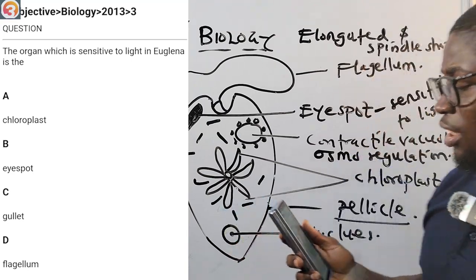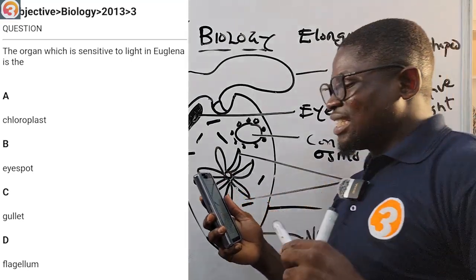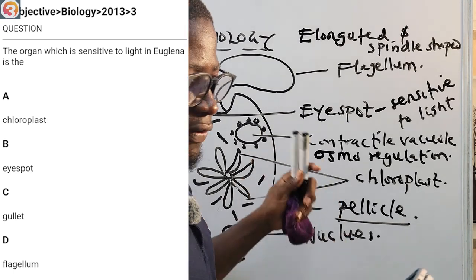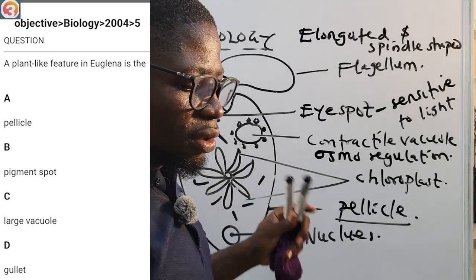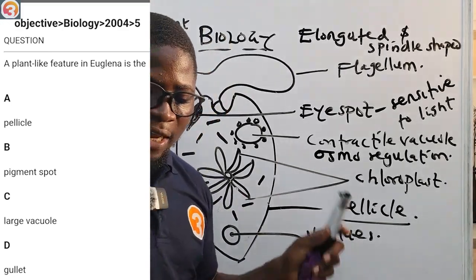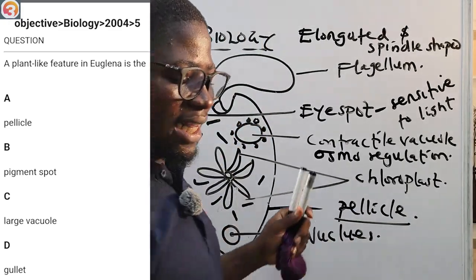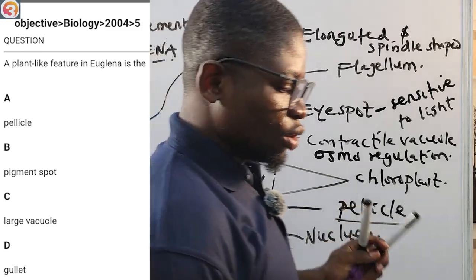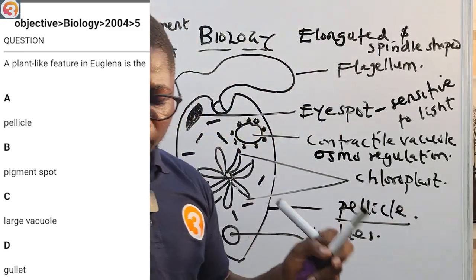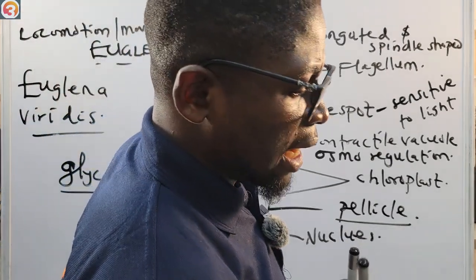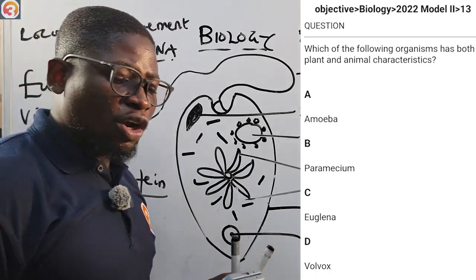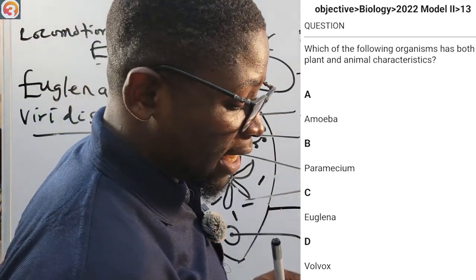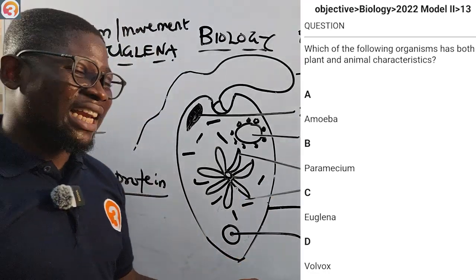The first question is the 2013 number three question: the organ sensitive to light in Euglena is — A) chloroplast, B) eye spot, C) gullet, D) flagellum. The answer is B, the eye spot. Next question: 2004 number five — a plant-like feature in Euglena is: A) pellicle, B) pigment spot, C) large vacuole, D) gullet. The answer is B — pigment spot, referring to the chloroplast. Then 2022 number 13: which of the following organisms has both plant-like and animal-like characteristics? A) amoeba, B) paramecium, C) Euglena, D) volvox. The answer is C, Euglena.